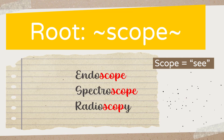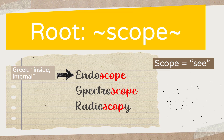How about the other examples? For 'endoscope,' the root 'endo' is also a Greek origin — it means 'inside' or 'internal.' So 'endoscope' means something that allows you to see inside. If you know what an endoscope is, it's basically a tube that goes into your body and allows a doctor to see what is actually going on inside.